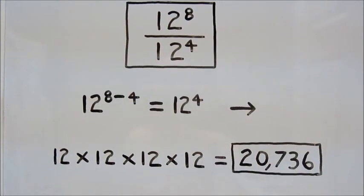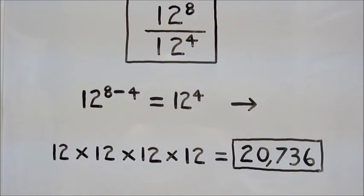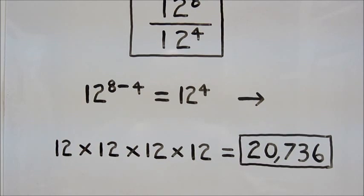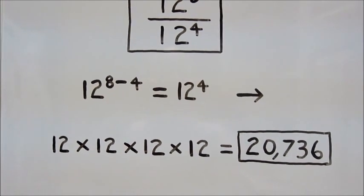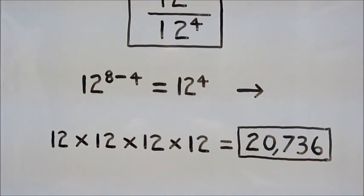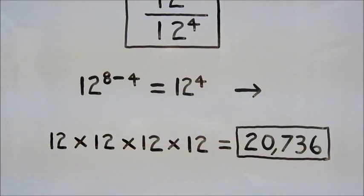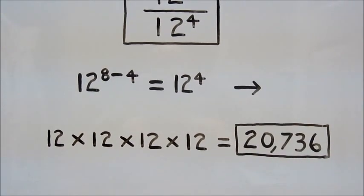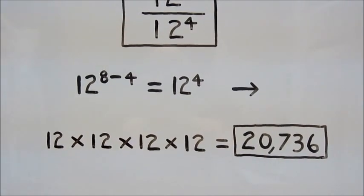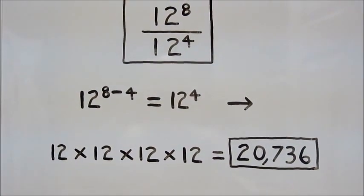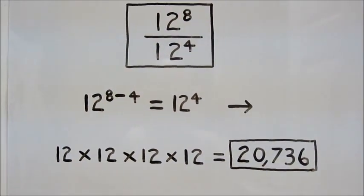To fully solve the problem, we multiply 12 by itself 4 times — 12 times 12 times 12 times 12 — to get a final answer of 20,736.